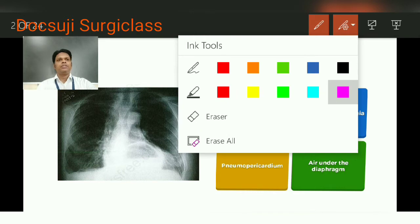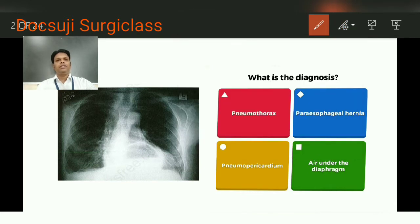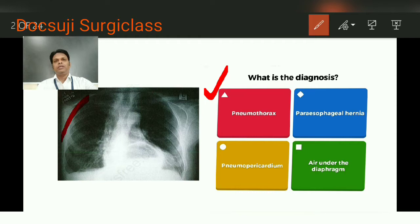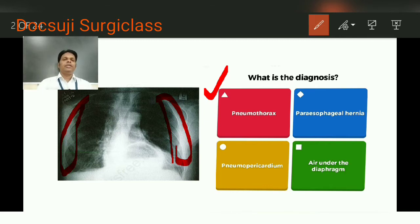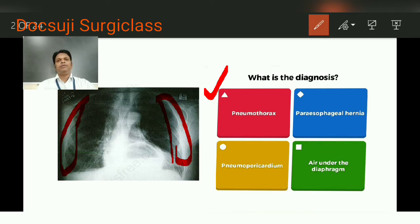We will discuss one by one. Pneumothorax is nothing but collection of air between the pleural spaces — that is the parietal and visceral pleura. In that region you will have collection of air, which usually appears more black on X-ray. In this picture, you cannot see any evidence of pneumothorax, so the first option is ruled out.